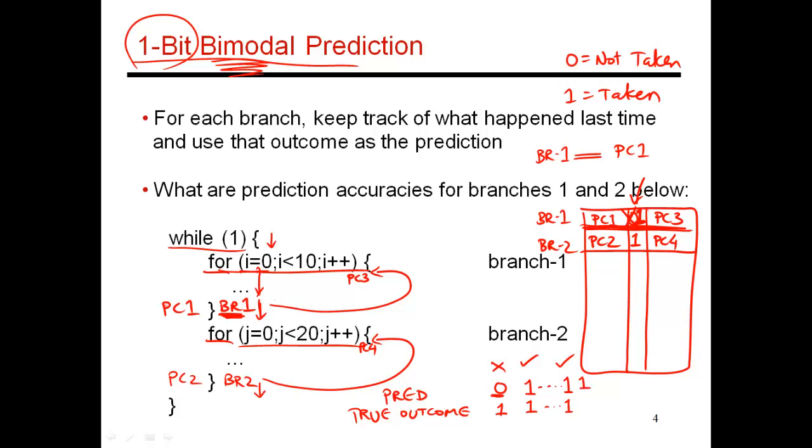when it's time to exit the loop, the predictor again thinks you're going to do the same thing as the ninth iteration. So it says, well, I think you should be taken. But in reality, the branch condition is evaluated, and you realize that i is now 10, time to leave the loop. And so the branch ends up being not taken.